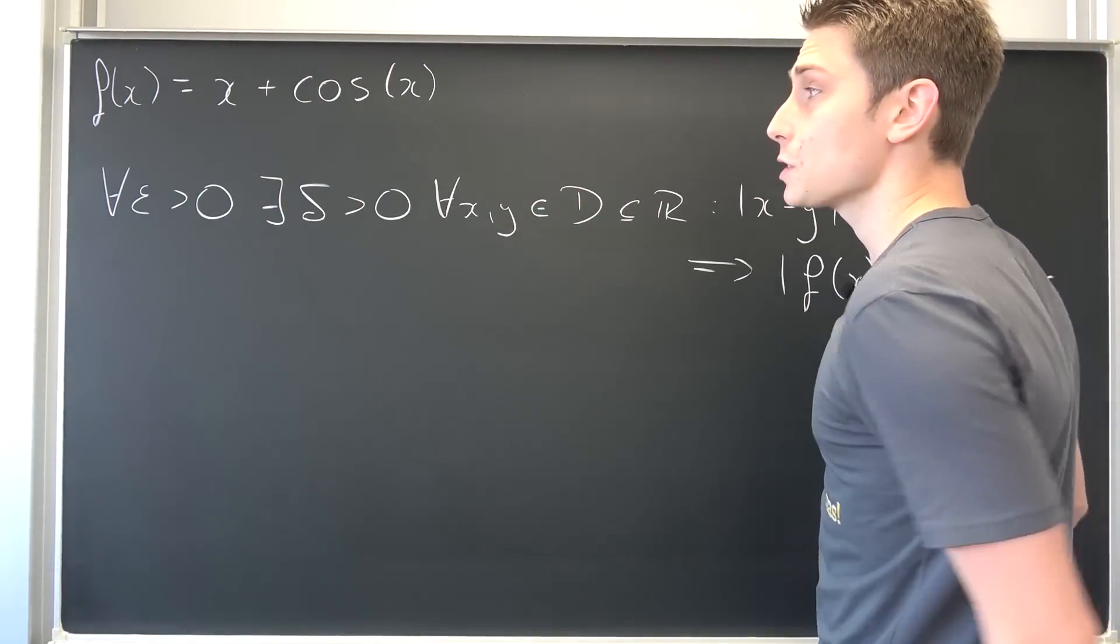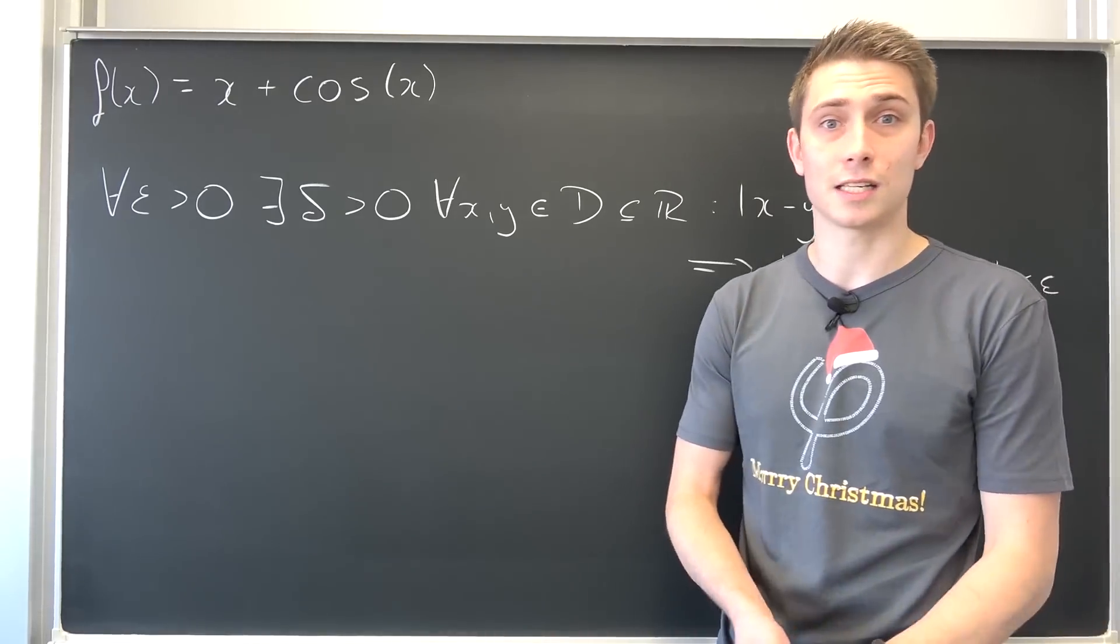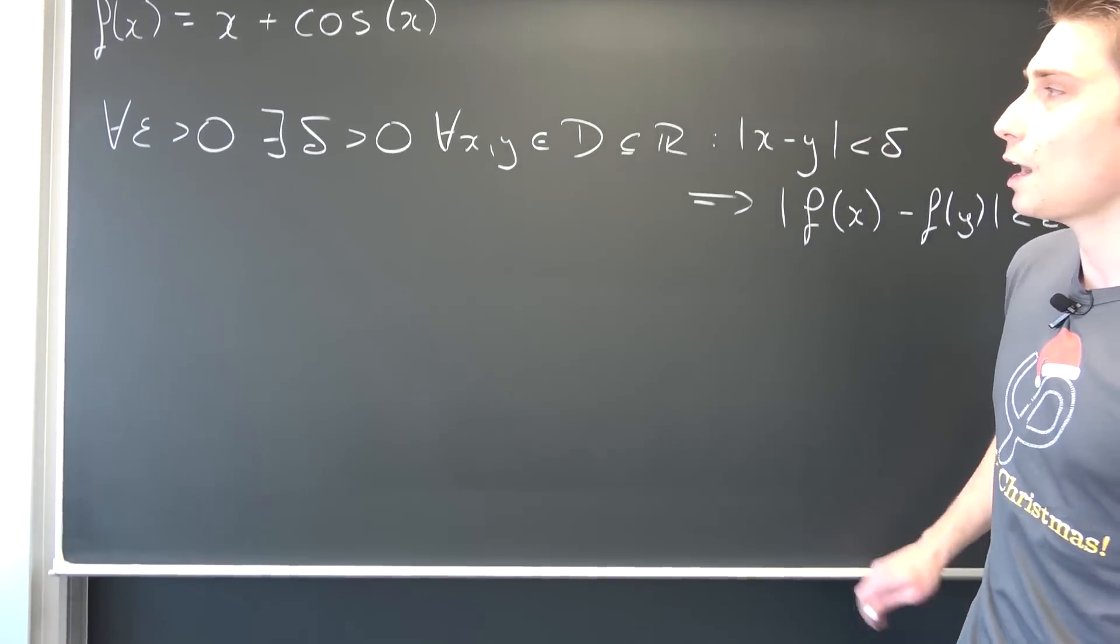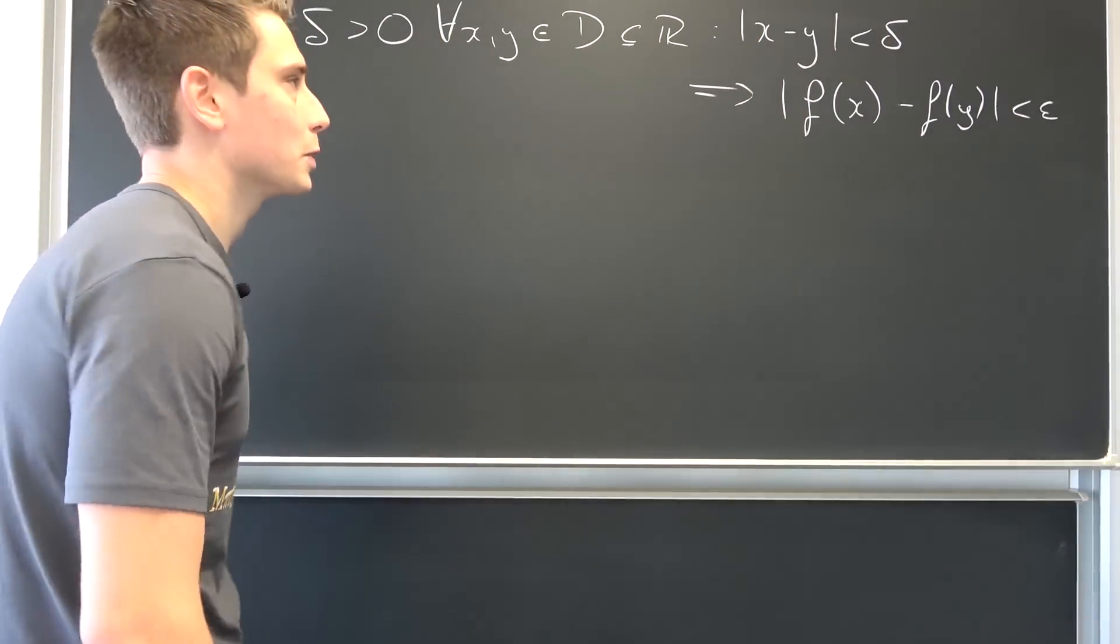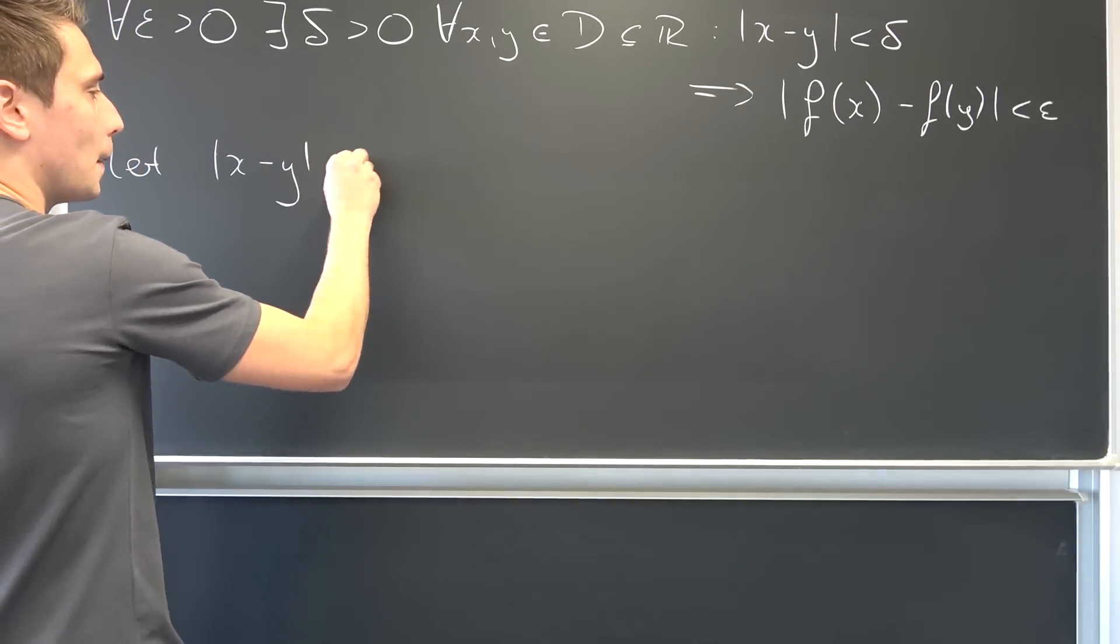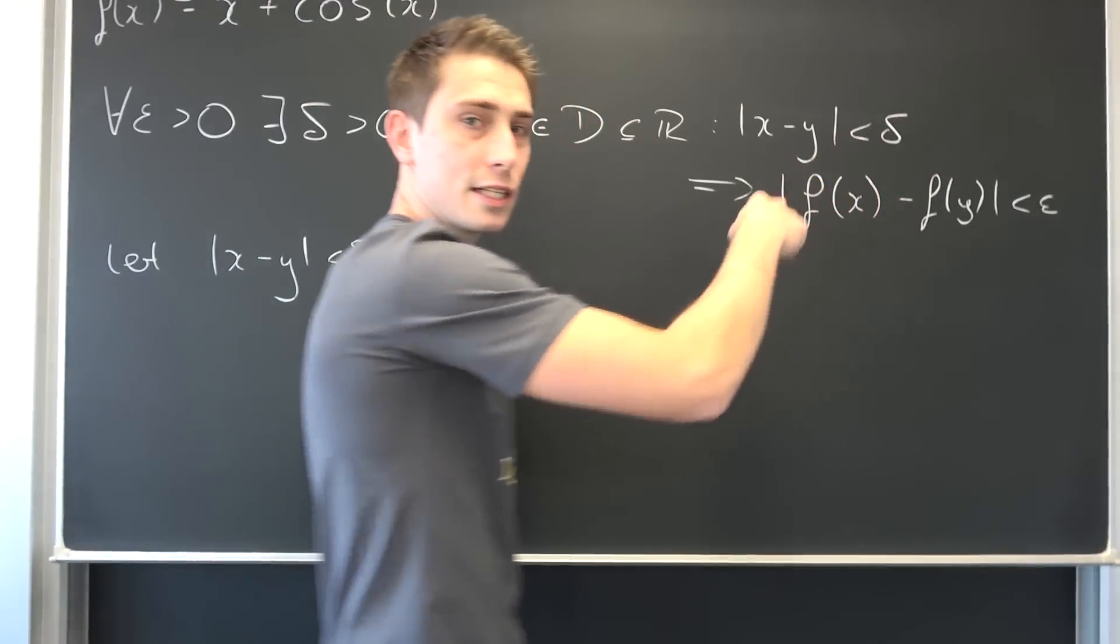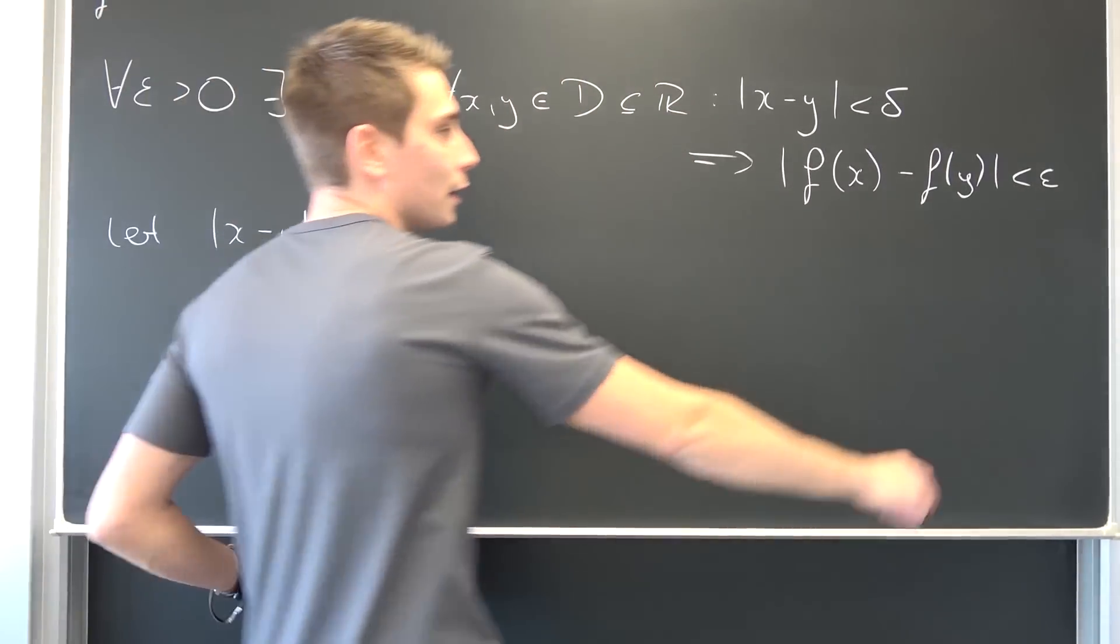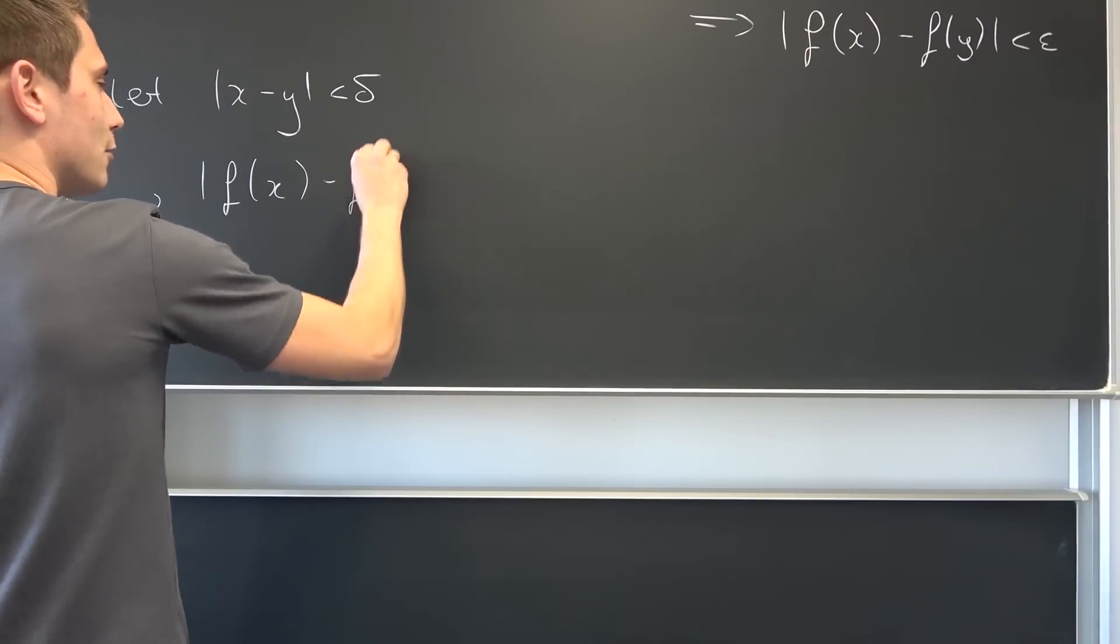For epsilon-delta proofs, it would be nice to find out some epsilon and some delta at first, some simple definitions. Then we are going to write out the proof one after the other. So we are going to do some playing around at first. Let us see what our delta actually is. Let us gather a bit of stuff and then we are going to backwards engineer everything.